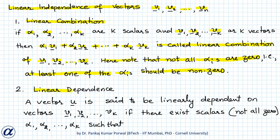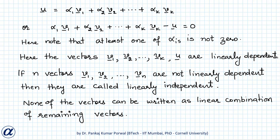Next is linear dependence. A vector u is said to be linearly dependent on vectors v1, v2, ..., vk if there exist scalars — not all zero — alpha_1, alpha_2, ..., alpha_k such that u can be written as a linear combination of these k vectors.